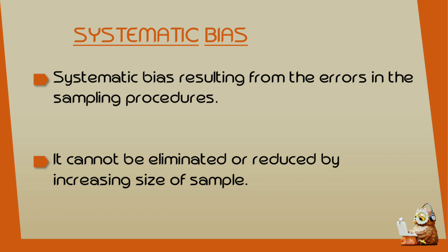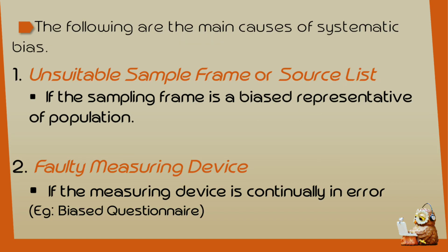Systematic bias cannot be eliminated or reduced by increasing the size of the sample. Even if you increase the sample size, the systematic bias still exists. The following are the main causes of systematic bias. The first cause is unsuitable sample frame or source list.